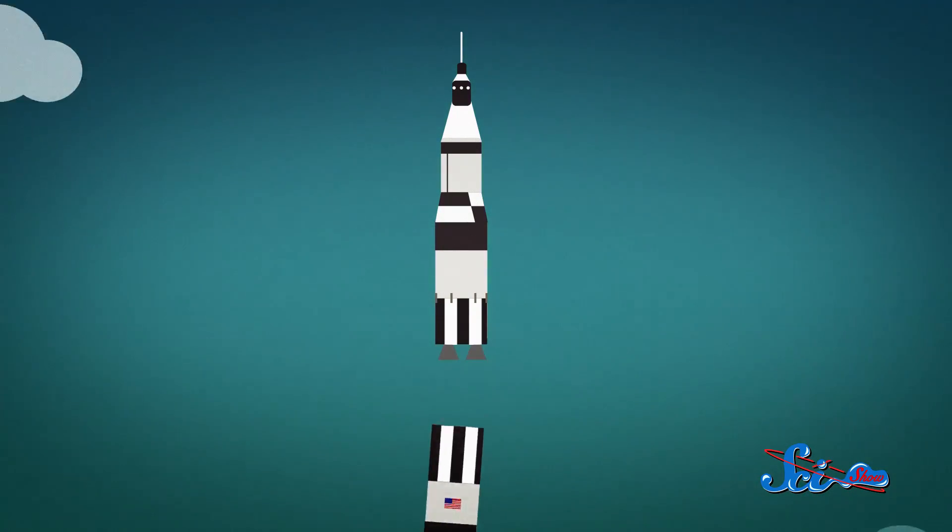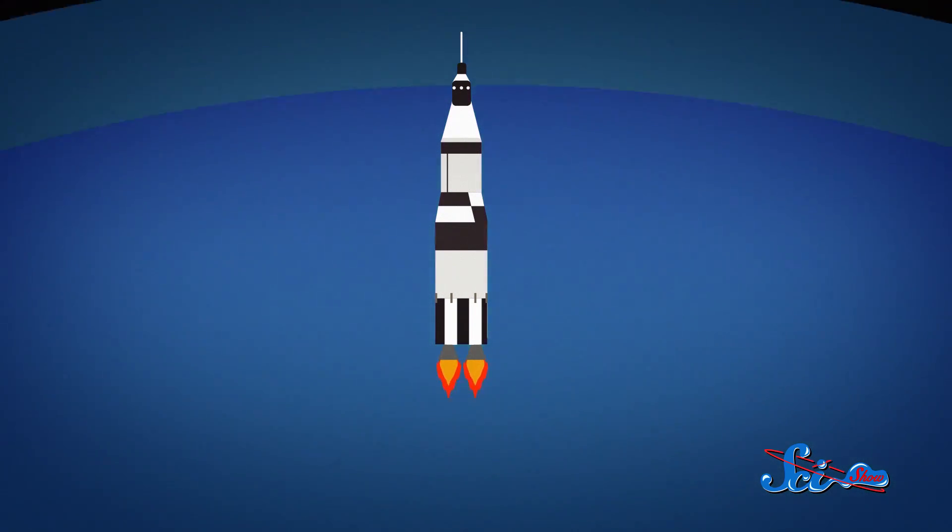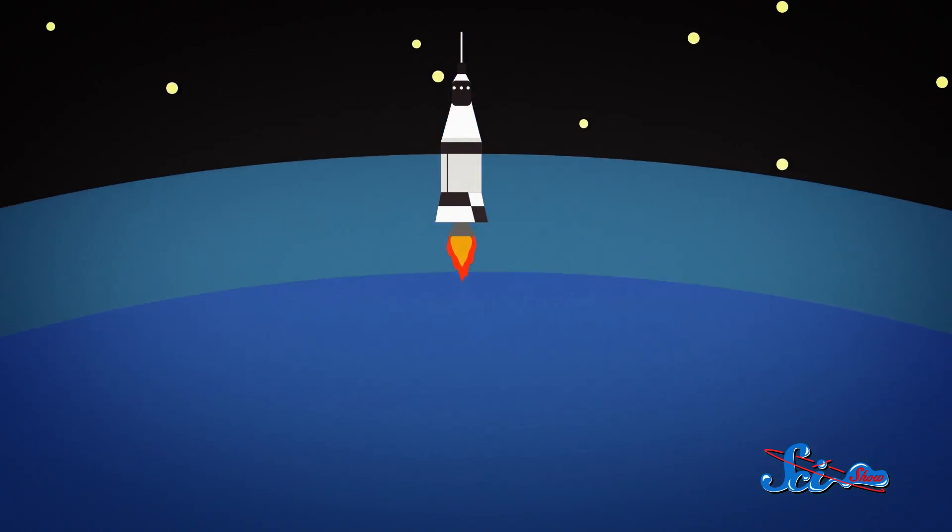After lifting the whole thing to about 68 kilometers, the first stage would separate, and the second stage would fire, carrying the spacecraft to the edge of orbit. Once there, the second stage would detach, and a third stage pushed the craft into orbit, and then toward the moon.